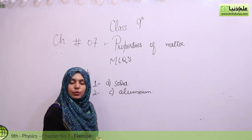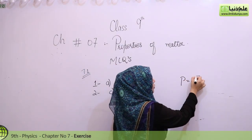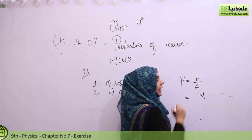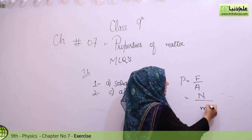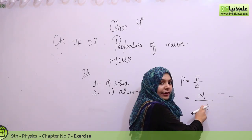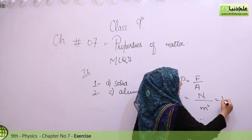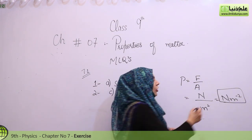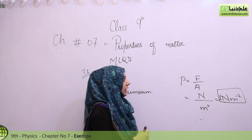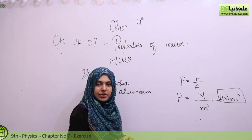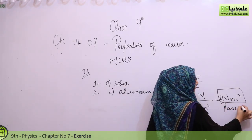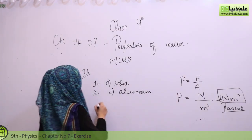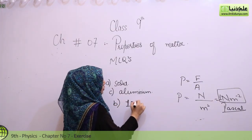Let's look at the pressure formula. Pressure is equal to force per unit area. Force is measured in Newtons and area is in meter square. If we write Newton per meter square without any power, it means 1. So the pressure unit Newton per meter square is what we call Pascal. Therefore, the right option is B — one Newton per meter square equals one Pascal.